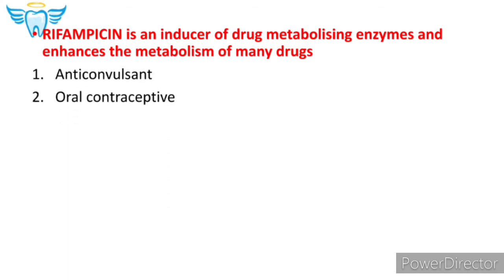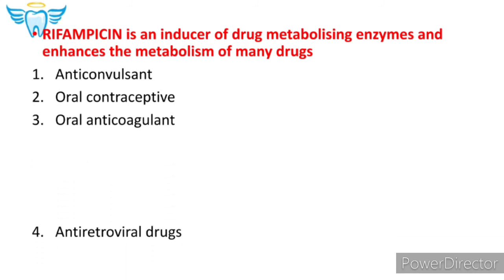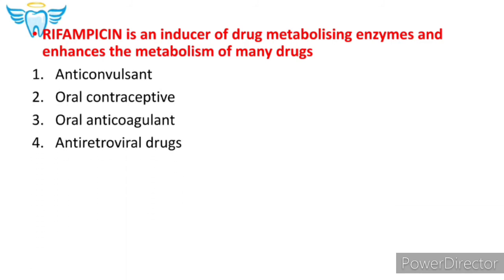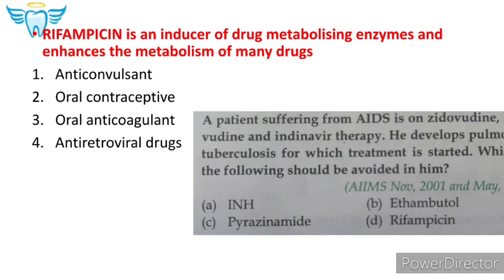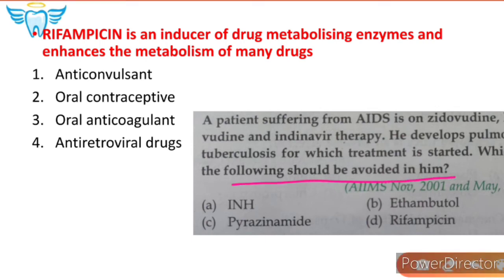Rifampicin is an inducer of drug-metabolizing enzymes and enhances the metabolism of many drugs, meaning in the presence of rifampicin the action of these drug groups is decreased. For the exam, the question may be: a patient suffering from AIDS is on anti-retroviral therapy and also develops tuberculosis — which of the following should be avoided? Remember, rifampicin should be avoided with anti-retroviral drugs, oral anticoagulants such as warfarin, oral contraceptives, and anti-convulsants.